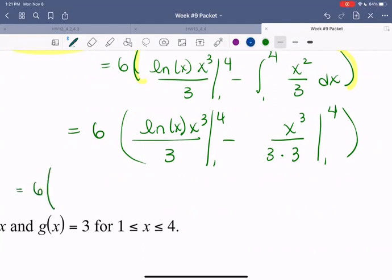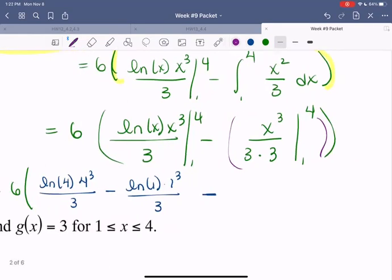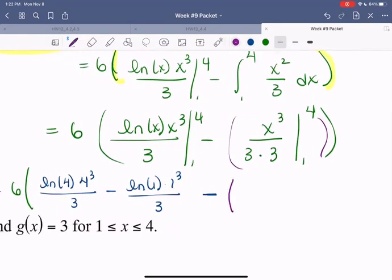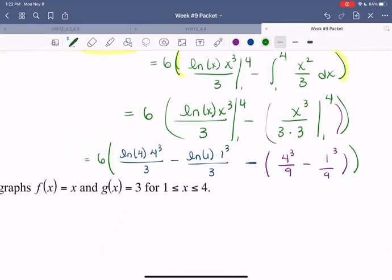We're multiplying everything by 6. First evaluate ln of x, x cubed over 3 at 4: ln of 4 times 4 cubed over 3. Subtract the evaluation at 1: ln of 1 times 1 cubed over 3. Then subtract, using parentheses so the negative doesn't slip out, x cubed over 9 evaluated at 4, which is 4 cubed over 9, minus when evaluated at 1, which is 1 cubed over 9.